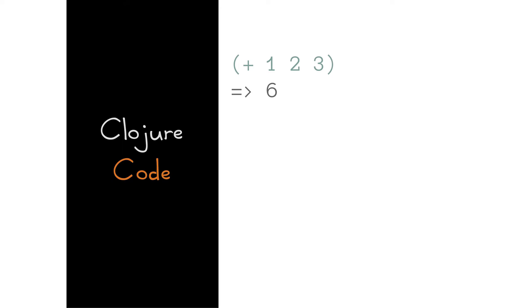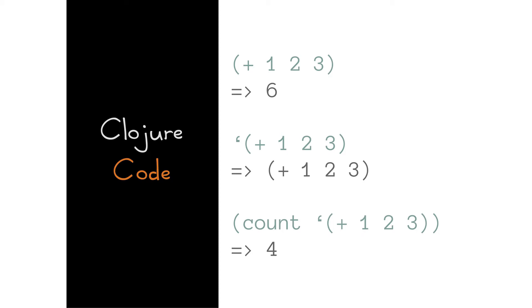This is Lisp. There are parentheses, the first thing is a verb, and the rest are arguments. You now know Lisp. The only difference is that Lisp uses S-expressions, which are nice because you have tools for working with the data structure itself. You can quote it and instead of it getting evaluated it returns the list, then you can do operations on it — for example, count how many things are in the list. This is the only thing that's different about Clojure versus Ruby. Basically, now you all know Clojure.